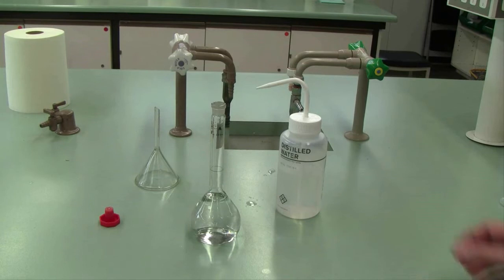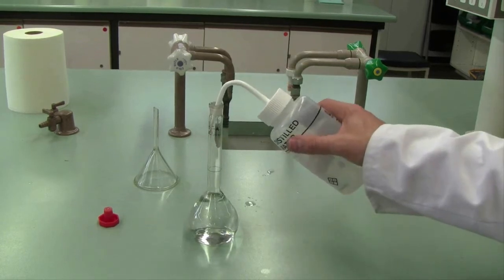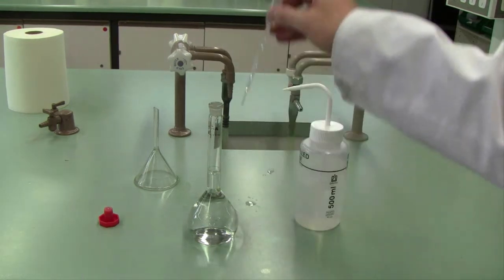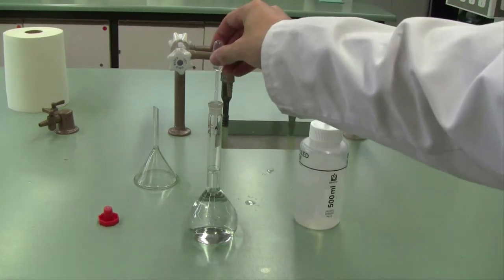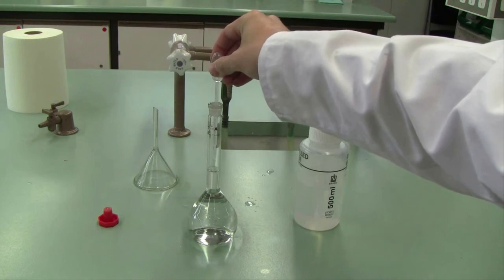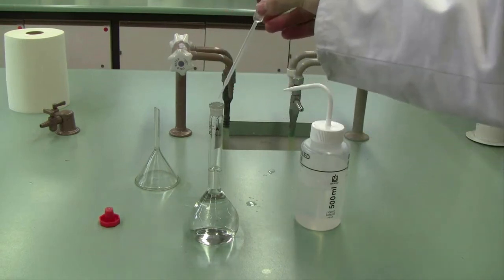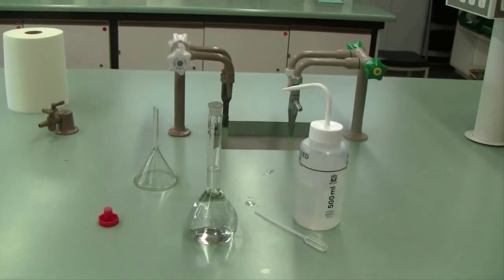And then as you get close to the top, you should be using your wash bottle. And when you get really close like this, put your wash bottle away. It's time now to break out your dropper. Just go drop by drop until you're at the mark, till you have the bottom of the meniscus sitting on top of the line. Whatever you do, don't go over or you'll have to start again.